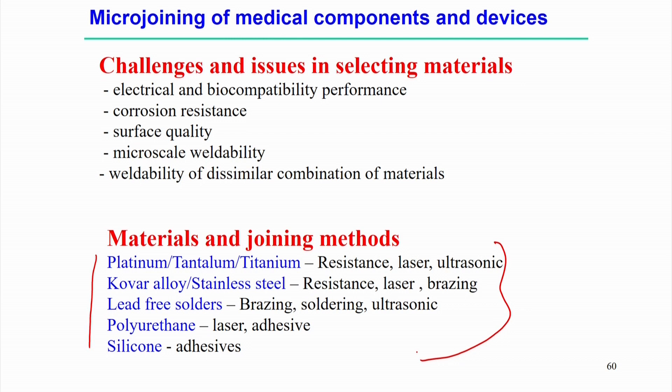Now we focus on specific micro joining technologies for vascular devices — catheters, guide wires, balloon angioplasty, and stents. These devices use welding technology in different ways. A guide wire or catheter is basically a wire or hollow tube, and the size and shape may vary according to the application. A catheter is a thin tube made from medical grade materials that can be inserted in the body — generally a single-use device.